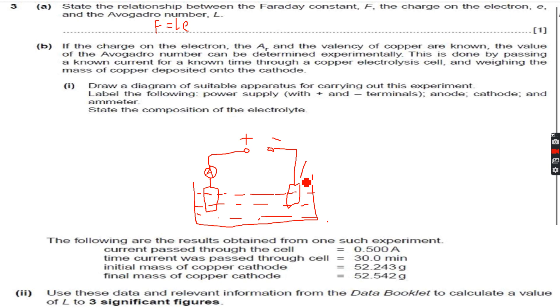Now this is the cathode. You have to label the cathode clearly, as stated in the question. And even if it's not stated, we will still label it because it creates a good impression on the examiner. This is the anode. This is the ammeter.